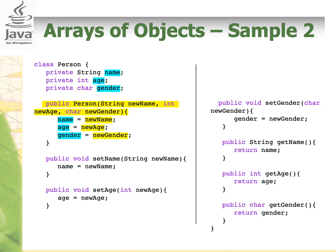Let's look at another example. Here we have a class called Person with three private instance variables: String name, int h, and char gender. It has one constructor with three parameters: newName, newH, and newGender. The instance variables will have the values of newName, newH, and newGender. It has three setter or mutator methods: setName, setAge, and setGender. It also has three getter or accessor methods: getName, getAge, and getGender, which will return the values accordingly.